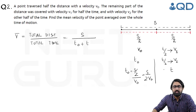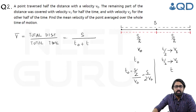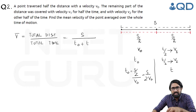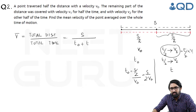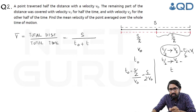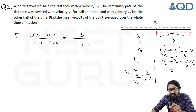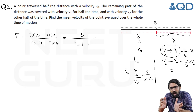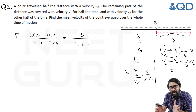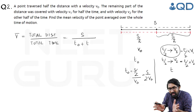Now we need to find t. The total distance travelled in the two halves of time is s/2. In the first half of time t/2, the distance covered is (t/2) × v1. In the second half of time t/2, the distance covered is (t/2) × v2. Adding these two distances should give s/2, because that is how the second half of the journey is made.